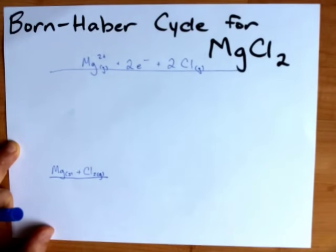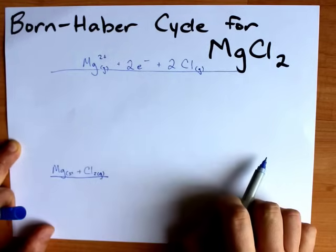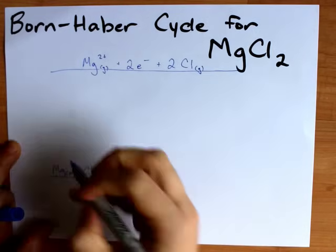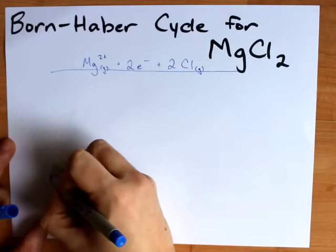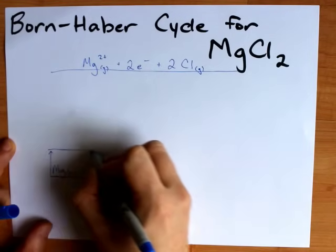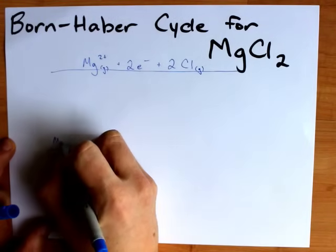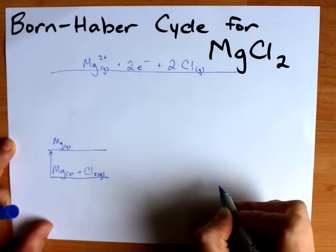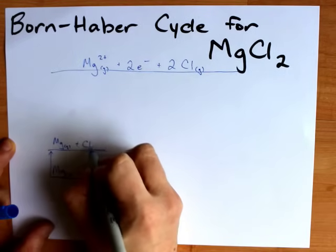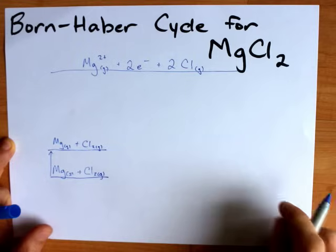Let me see if I can adjust—oh, that's much clearer for you probably. In any case, in order to get from here to there, I need to first convert my magnesium solid into magnesium gas. The chlorine will be untouched in that process.